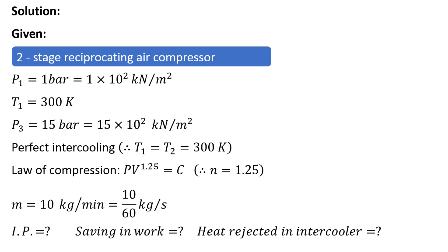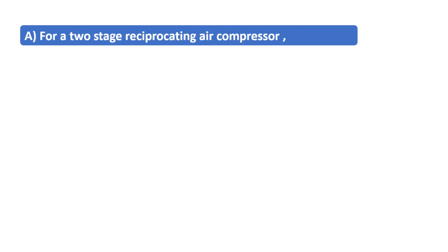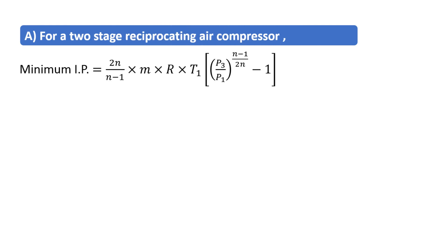We have to find the indicated power, saving in work compared to single-stage compression, and heat rejected in the intercooler. For a two-stage reciprocating air compressor with perfect intercooling, the minimum indicated power is given by: (2n / n−1) × ṁRT₁ × [(P3/P1)^((n−1)/2n) − 1]. This formula has been derived in a previous video, which you can refer to.